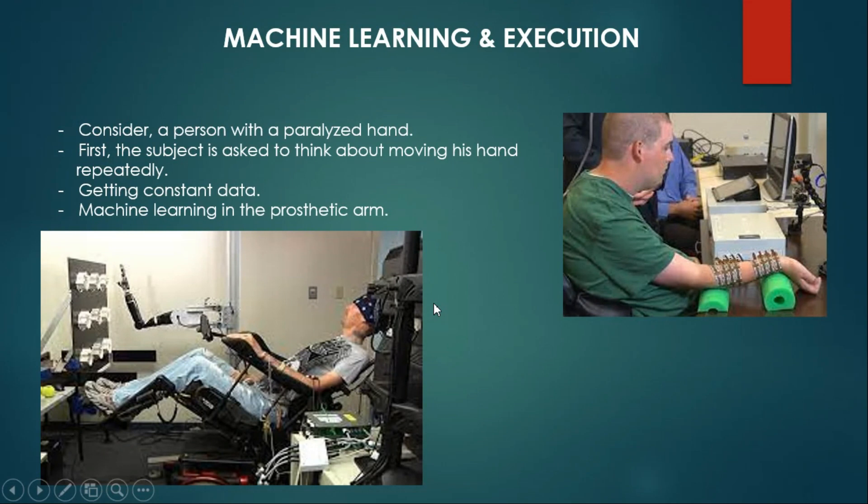Let me make it simple. Let's say there is a type of data, and if a person thinks repeatedly the same thing, we can see the same data coming through the monitor. After getting this constant data, we use various machine learning and AI techniques to teach the prosthetic arm to learn this data. So whenever this machine gets the same data, it will use this arm.